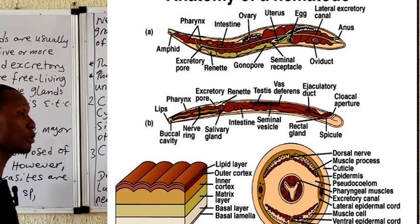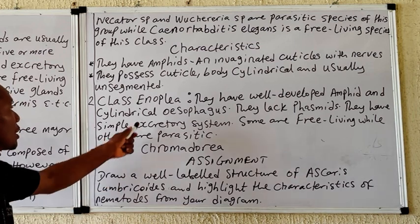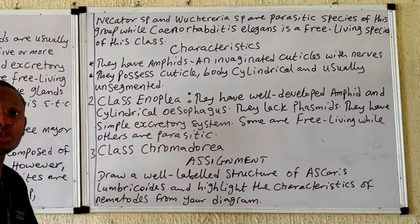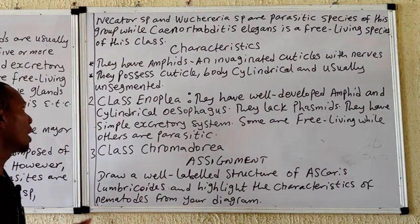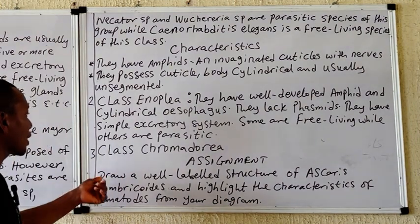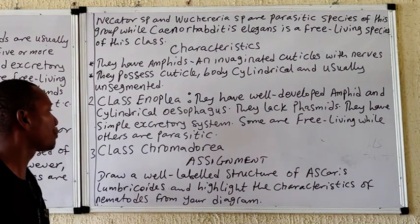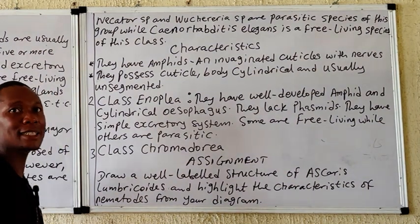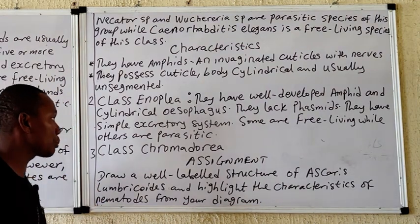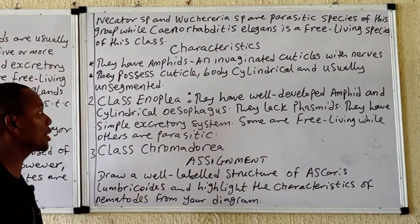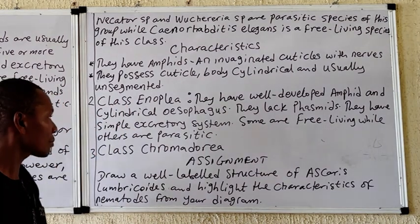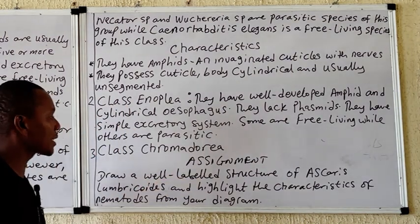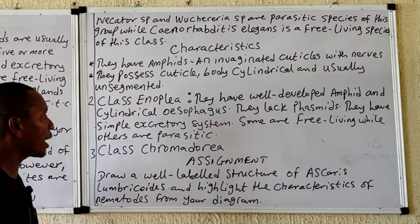The majority of nematodes are unsegmented. The next class is Enoplea, which also possesses a well-developed amphid. They have a cylindrical esophagus and a simple esophageal structure. The last class is Chromodoria, which also has the amphid present. Take note that this group lacks the phasmid.